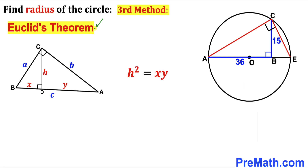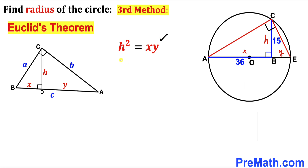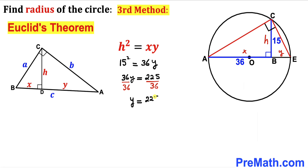Recalling Euclid's theorem: in a right triangle ACE with altitude CB drawn to the hypotenuse, h² = x · y, where h is the height BC, x is AB, and y is BE. Filling in: 15² = 36 · y, so 225 = 36y, and therefore y (which is BE) equals 225/36.